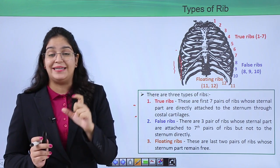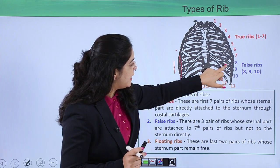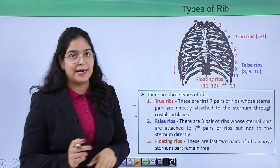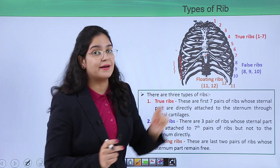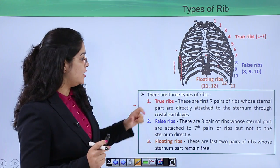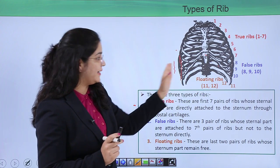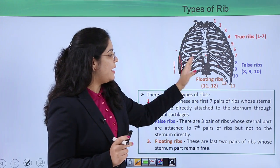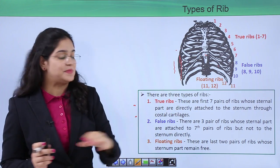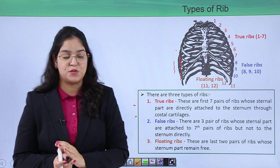Ribs eight through ten are called false ribs. As you can see, these ribs are not directly connected to the sternum; instead they are connected to the seventh rib. That is why they are called false ribs. Ribs eleven and twelve are not connected to the sternum or to any other rib, so they are called floating ribs — they are free.